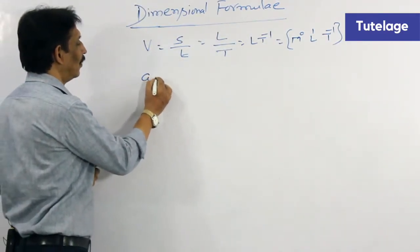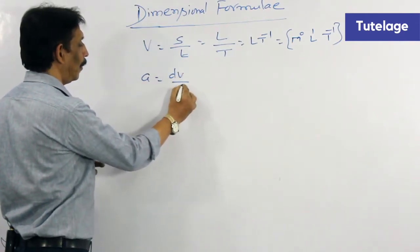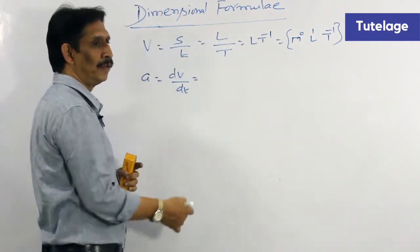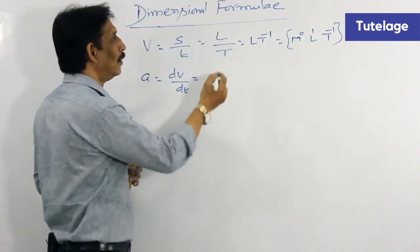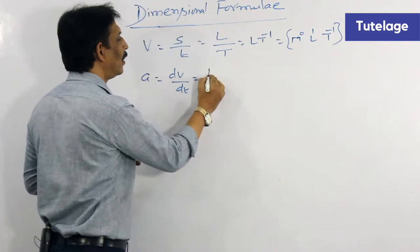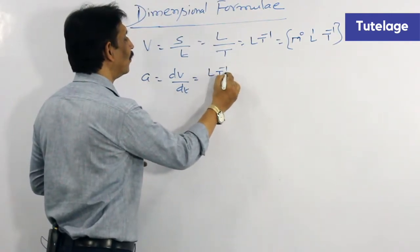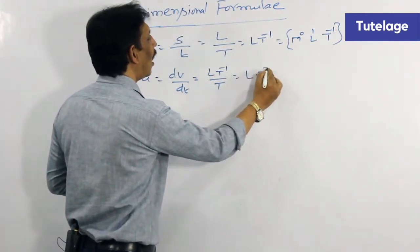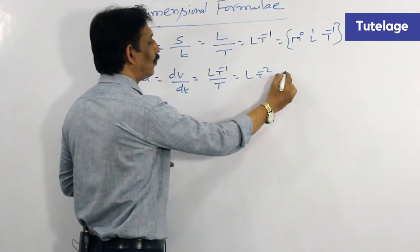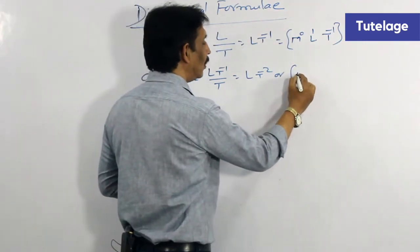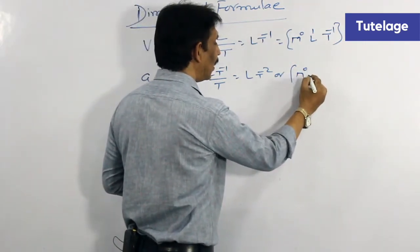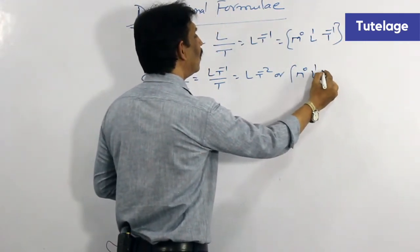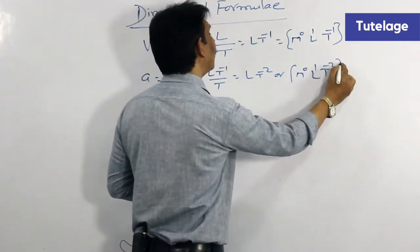Acceleration is dV by dt, that is the change in velocity by time. Velocity is L T minus 1, divided by time, giving L T minus 2. Since there is no mass, the dimensional formula for acceleration is M0 L1 T minus 2.